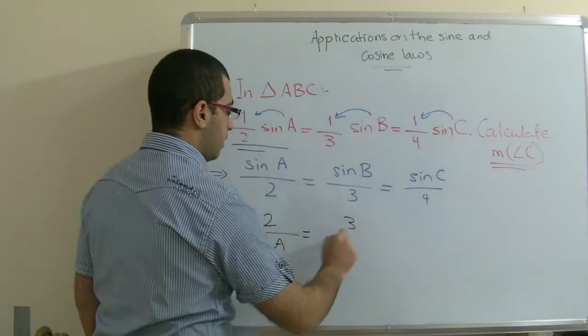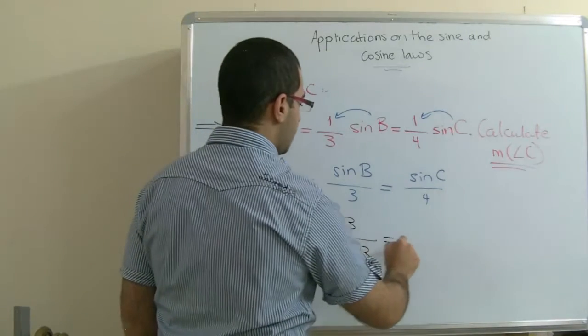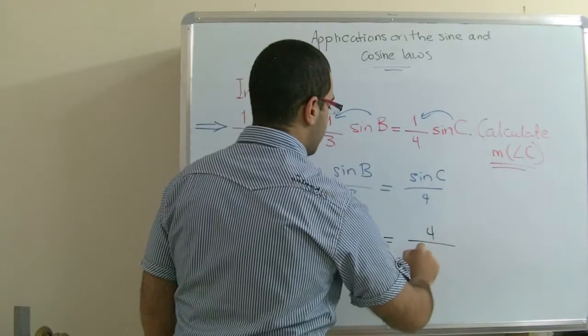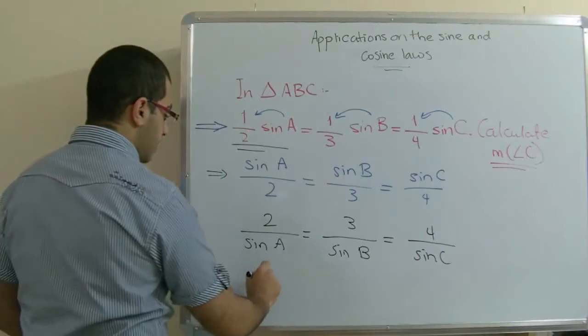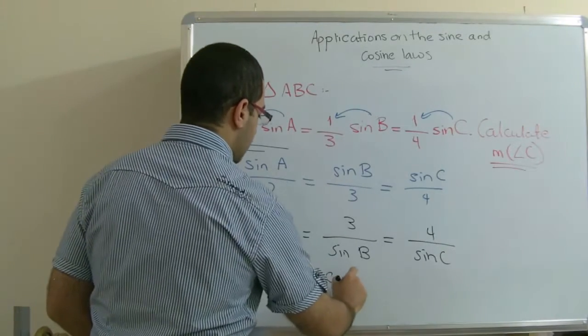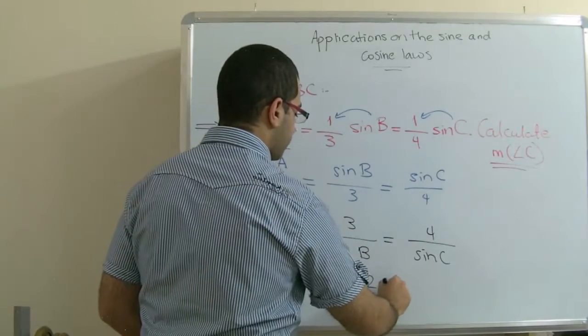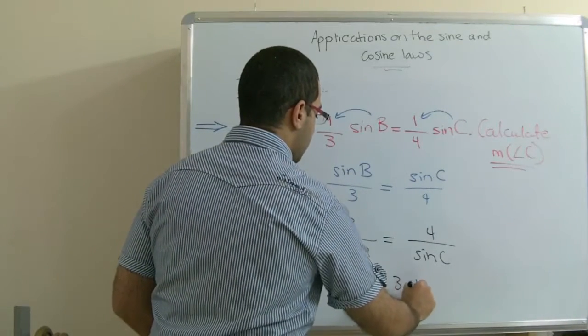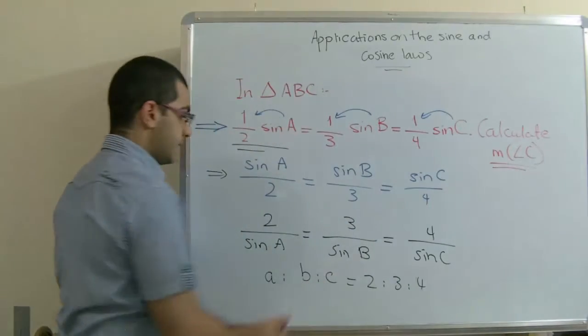So we can write this as 2 over sine A equals 3 over sine B equals 4 over sine C. From this we will get the ratio between A, B and C which will equal 2 to 3 to 4. Now we know the ratio between A, B and C.